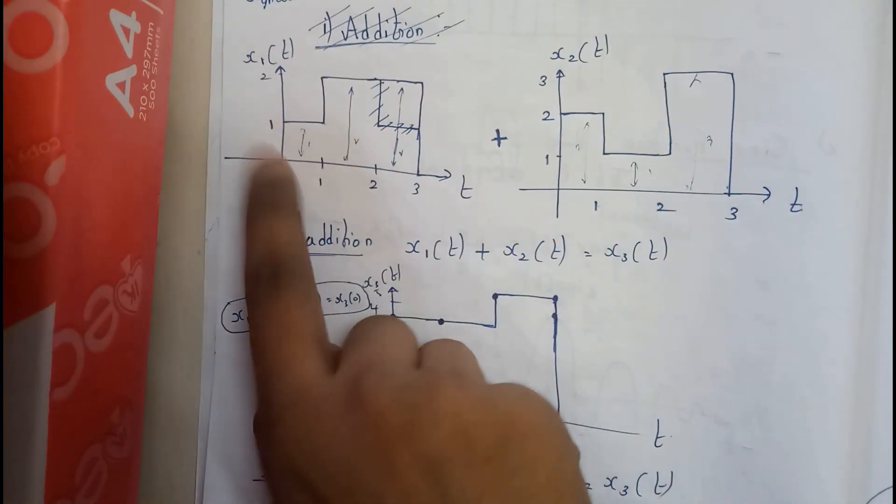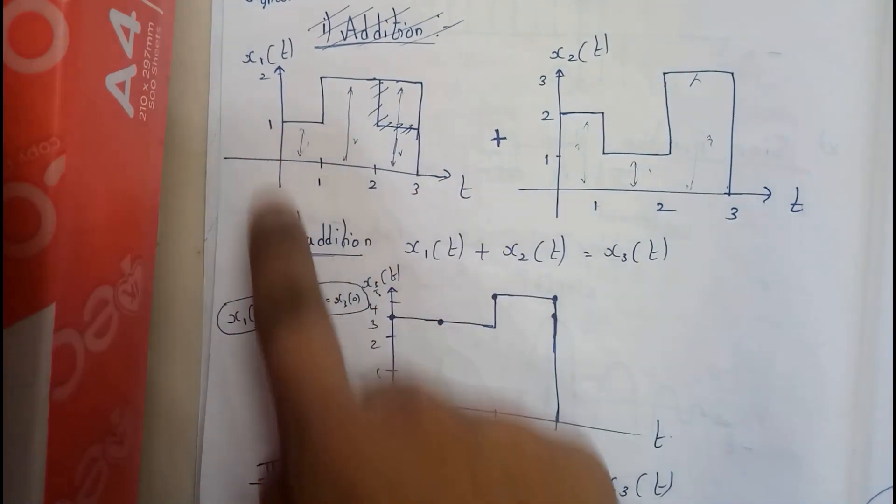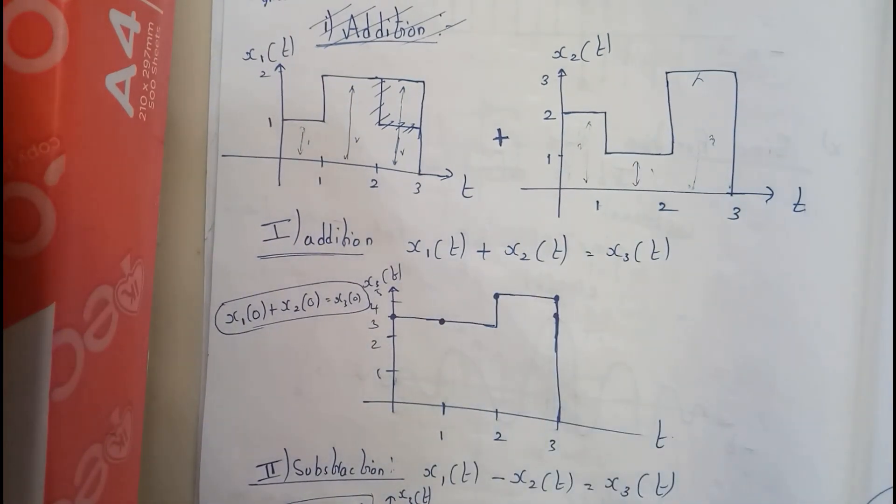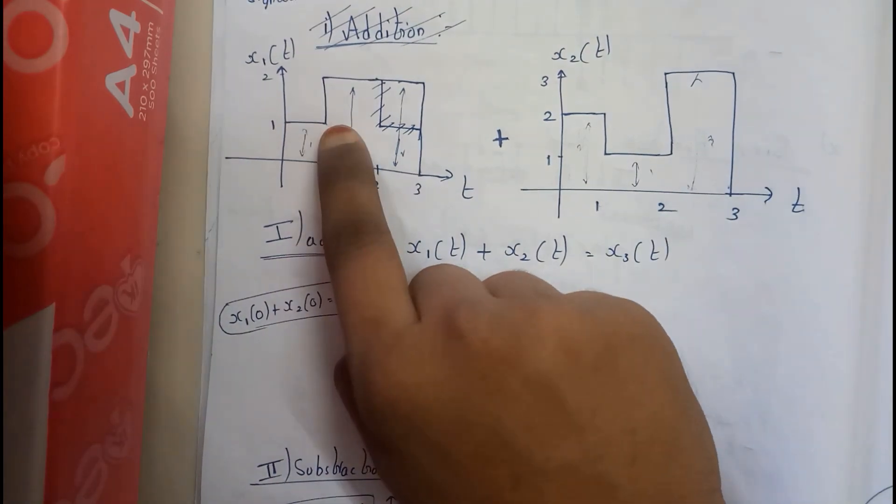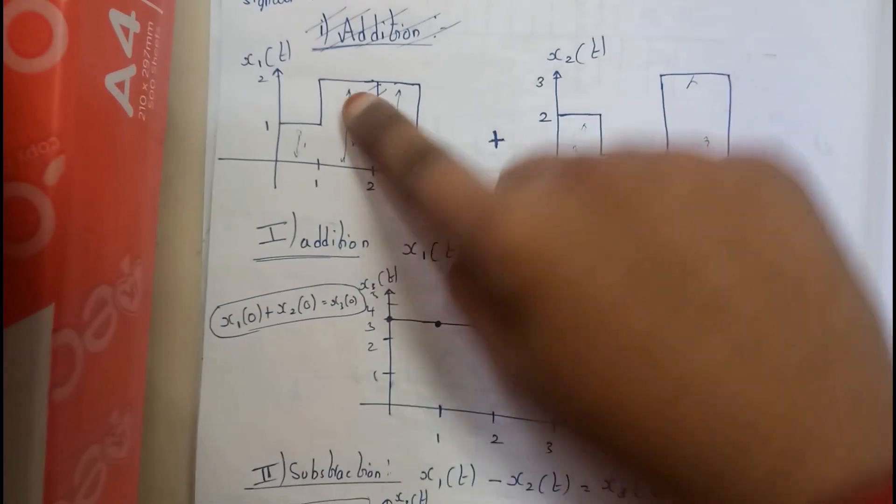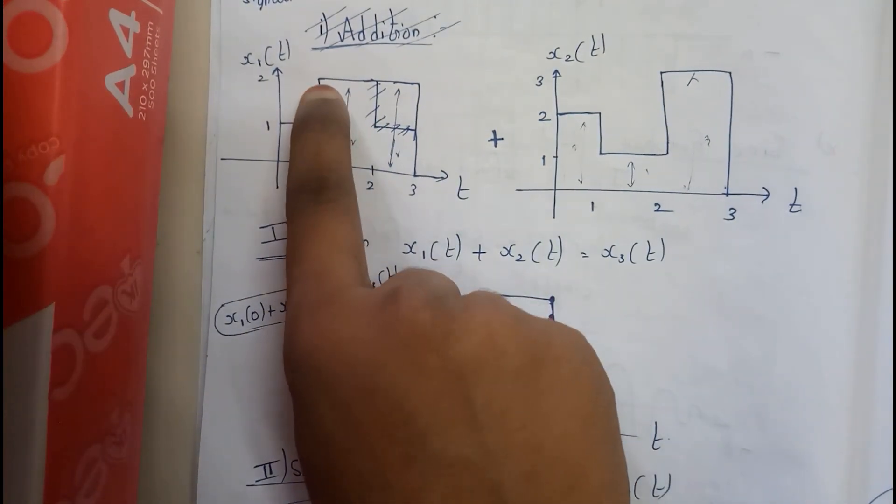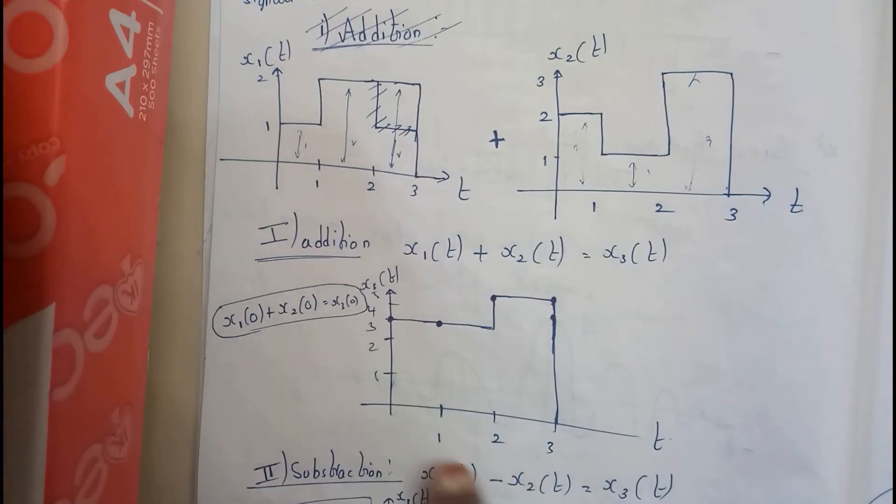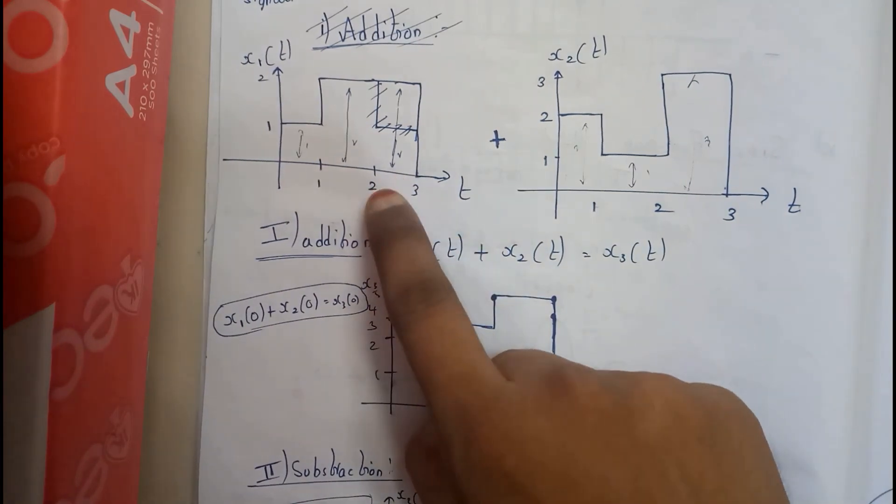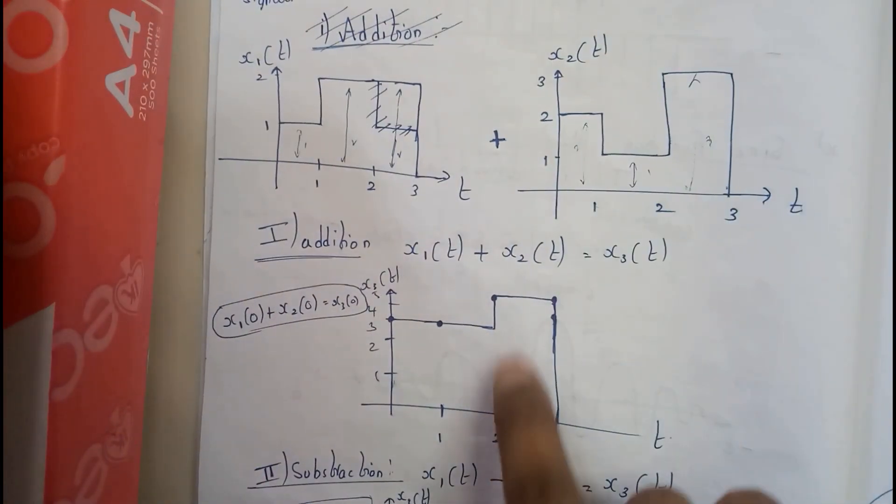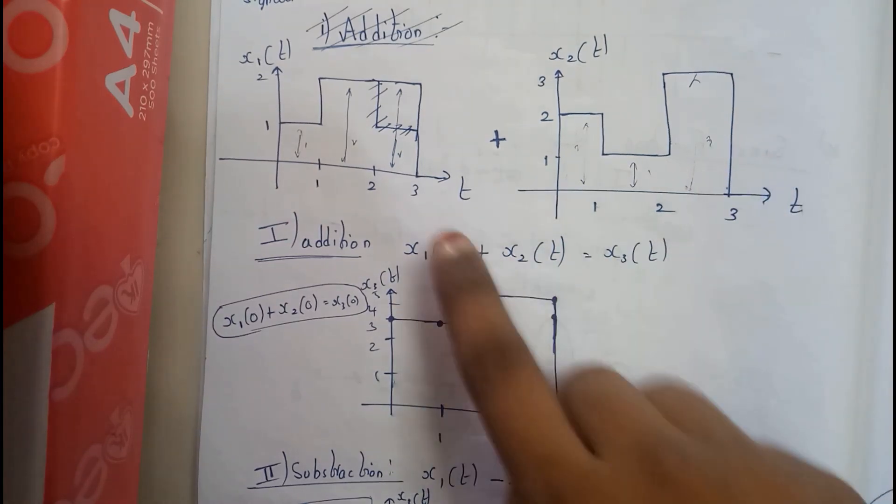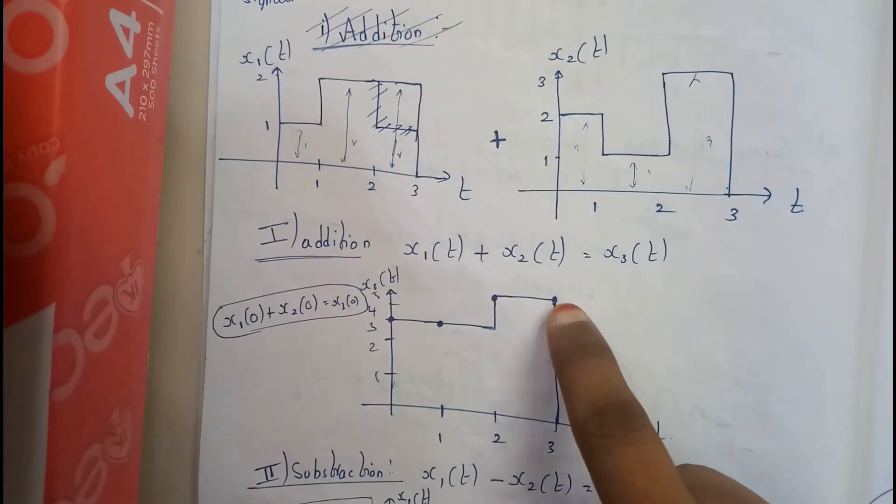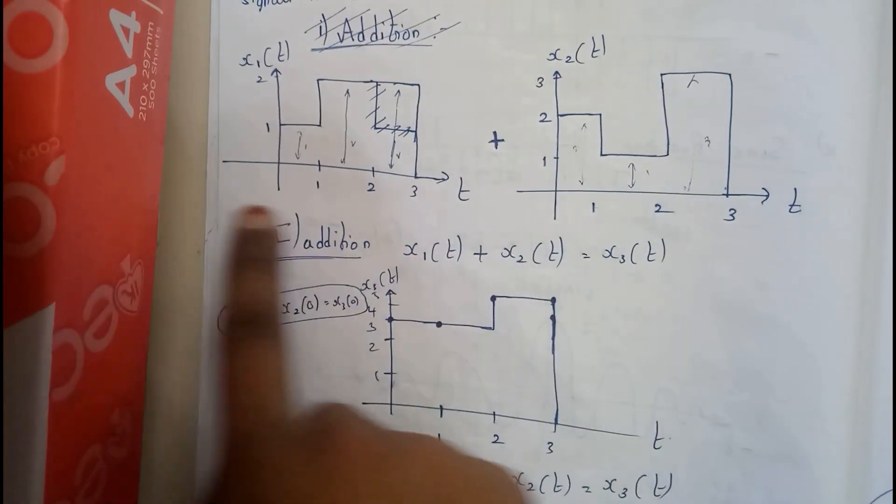So we need to add these both signals. At zero it is one and at zero it is two, so two plus one is three. So at zero we'll be marking three, which is nothing but x1 plus x2 equals x3 of t. Similarly at one, it is two and here at one it is one, so one plus two equals three at the same point. At two it is two, at two it is three, so at two it should be five, so it has increased a bit. And at three it is two, and at three it is three, so two plus three is five.